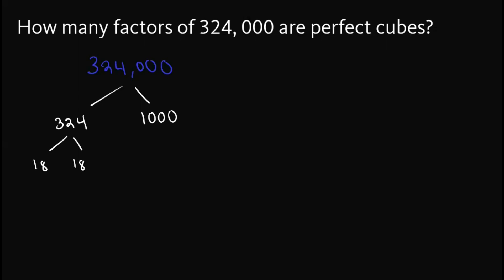For 1,000, we can split this up into 10 and 100. Now, for 18, this can be written as 2 times 9, 2 times 9, and for 10, this is simply 2 times 5. For 100, this is simply 10 times 10.